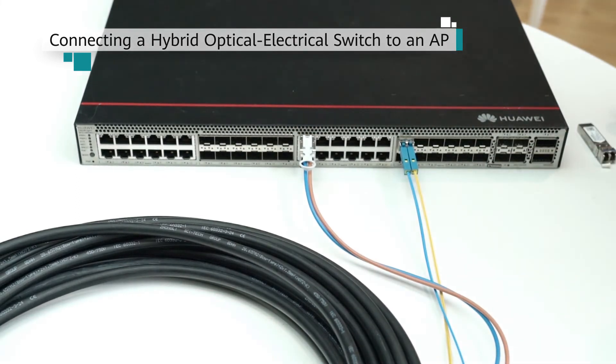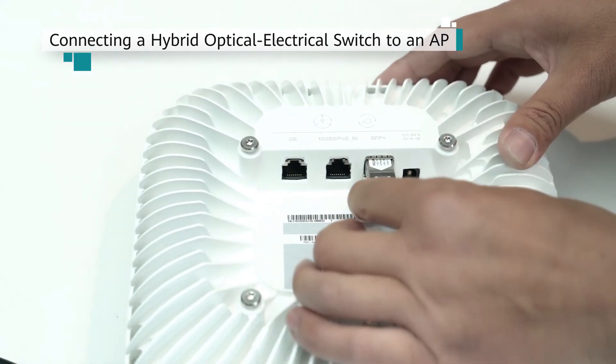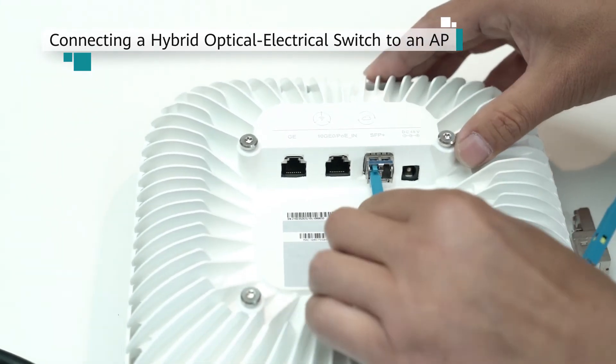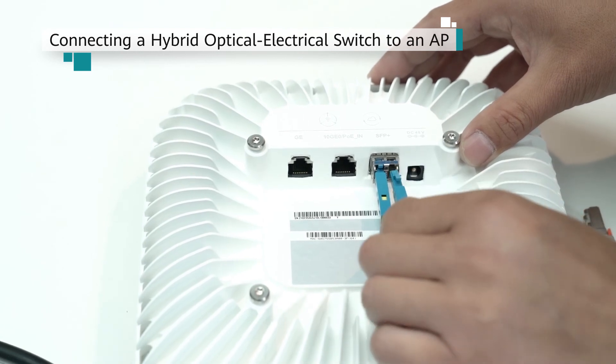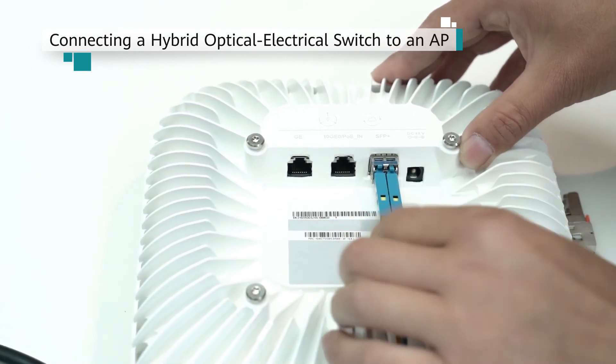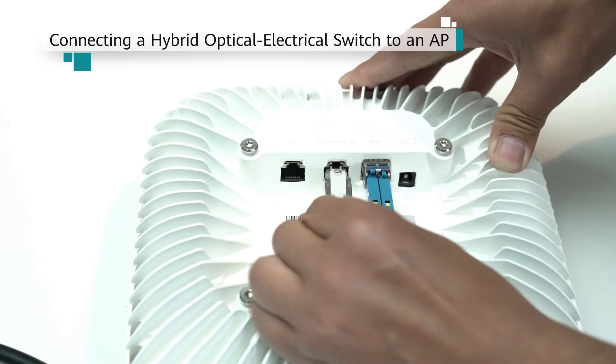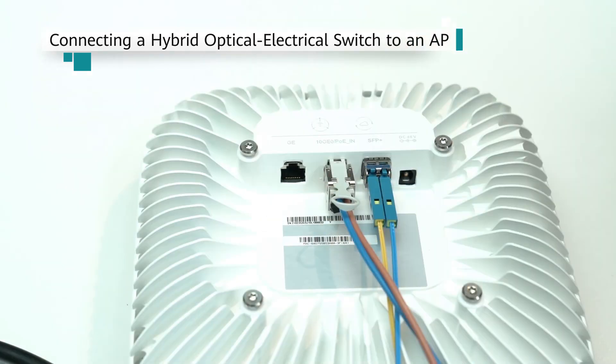To ensure convenient cabling, a hybrid cable must be connected to a Multi-GE port and an optical port with the same number. Connect the LC connectors at the other end of the hybrid cable to the RX and TX ports on the optical module installed on the AP. Connect the RJ45 connector at the same end to the PoE port on the AP.